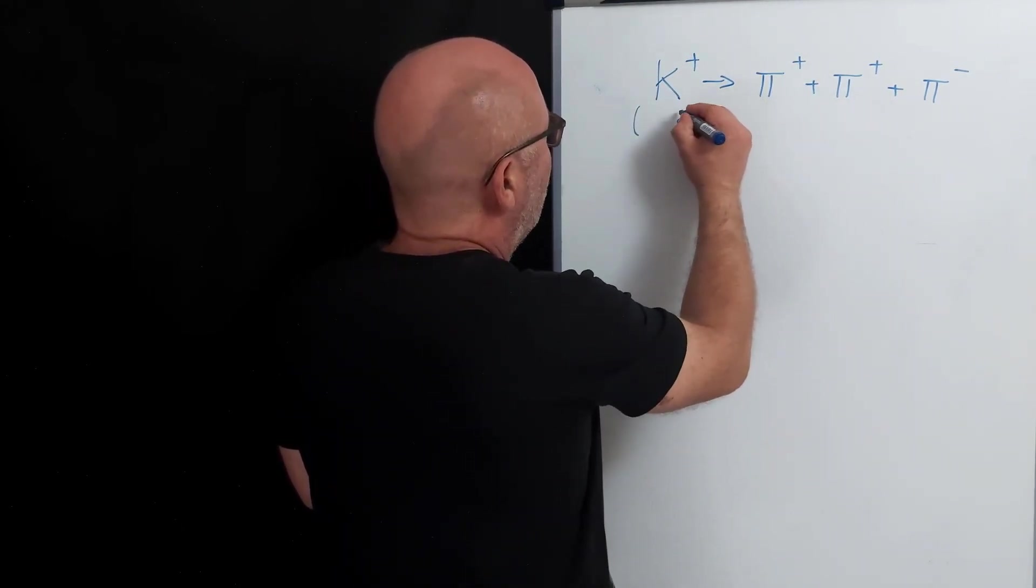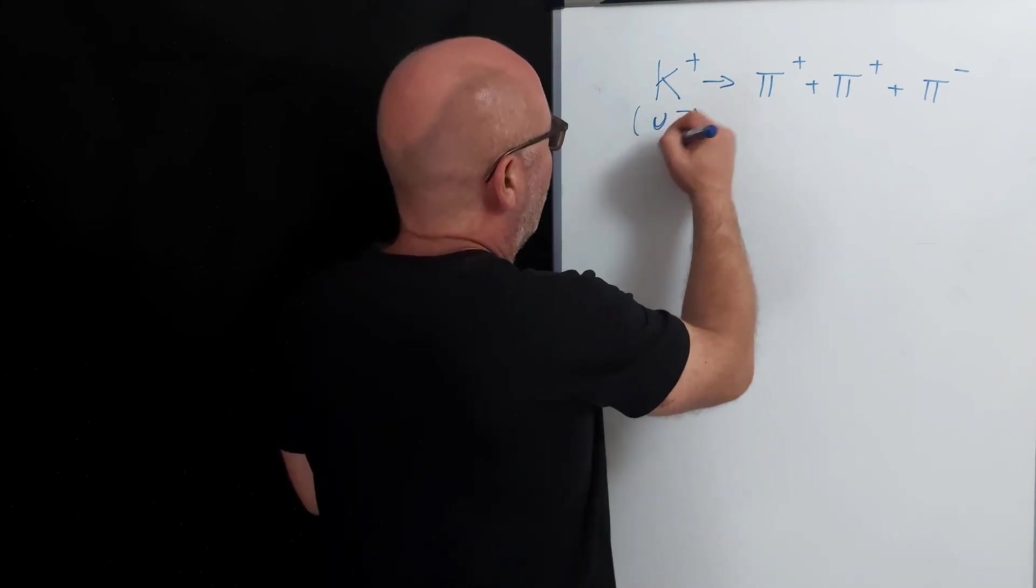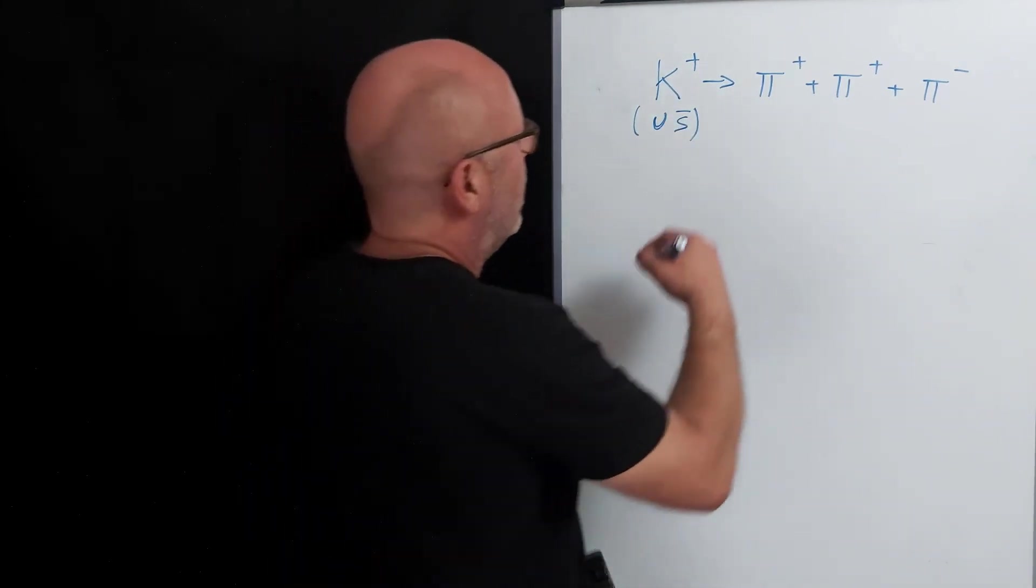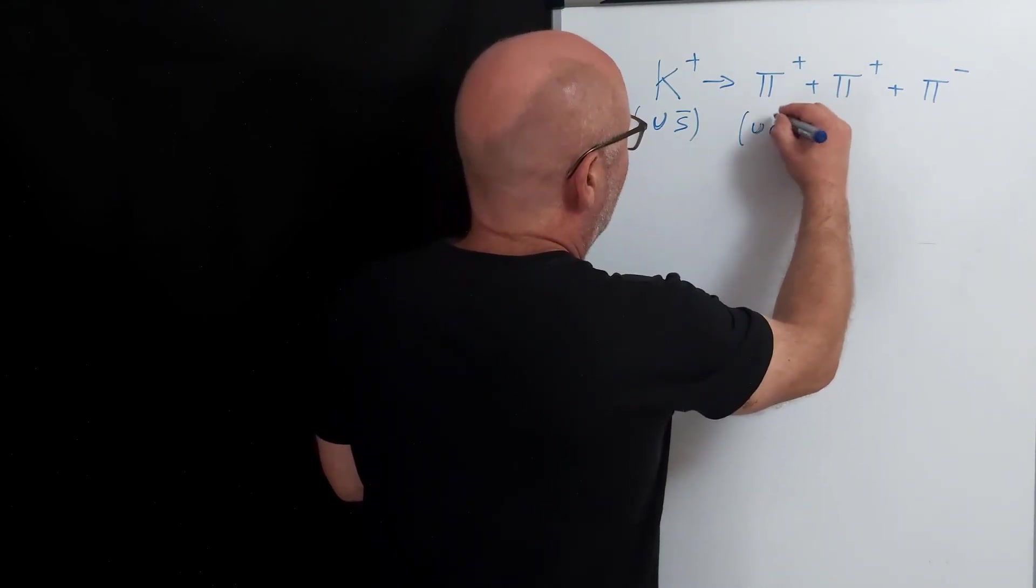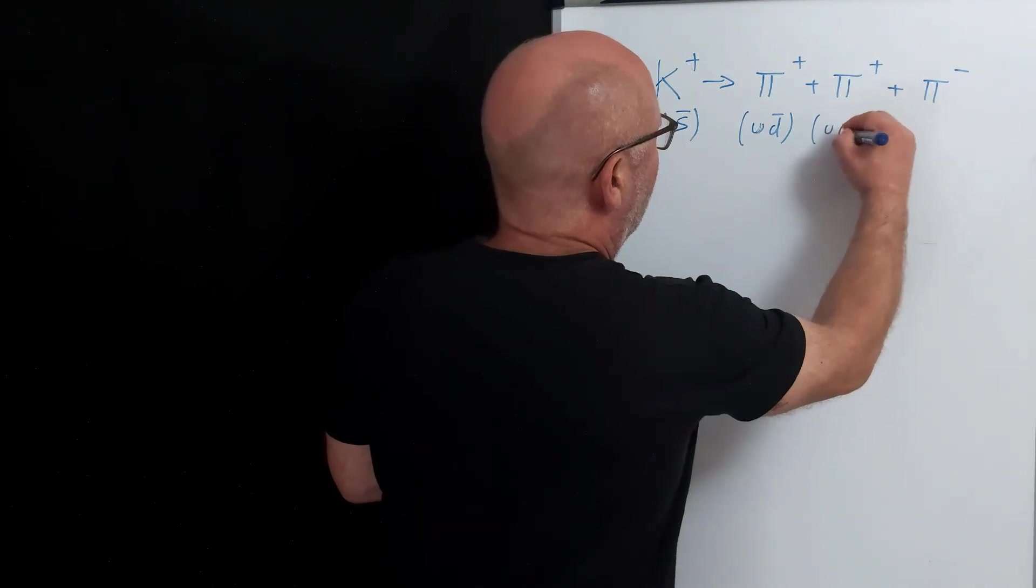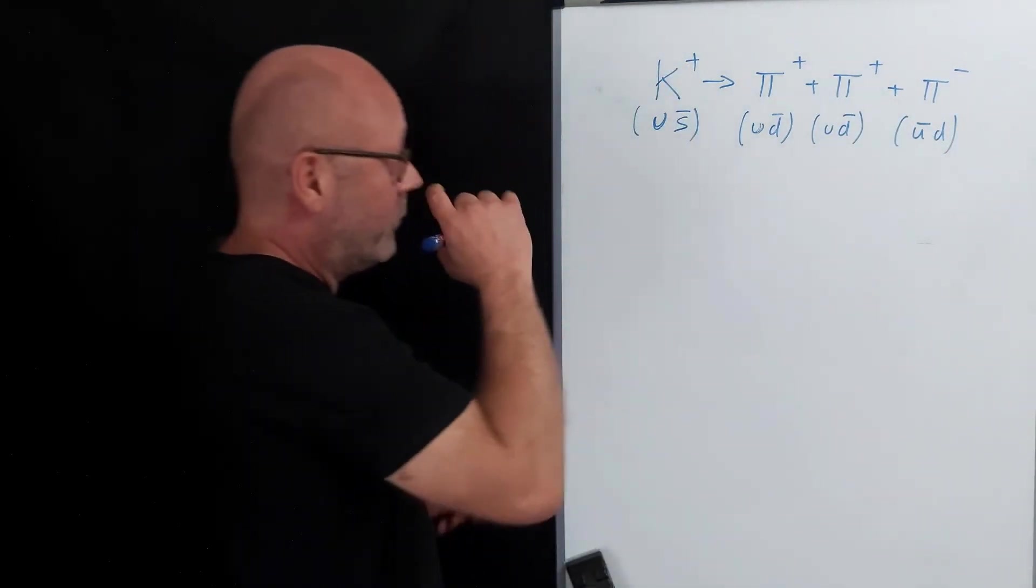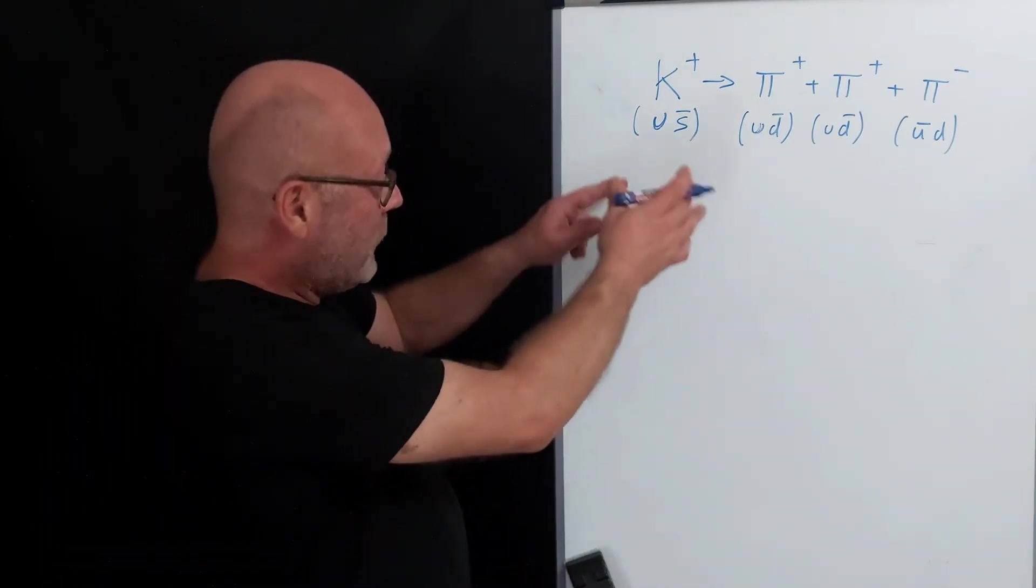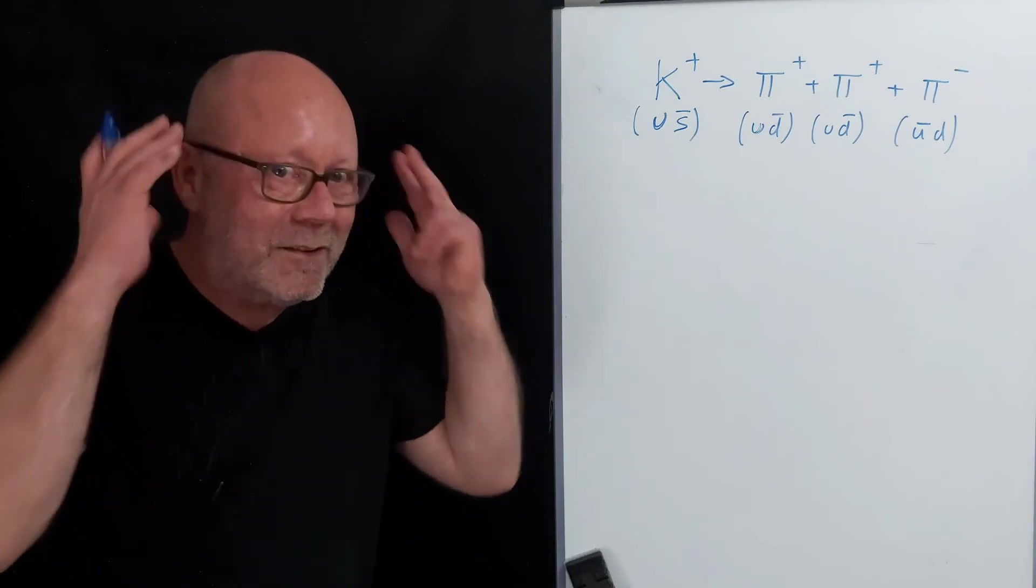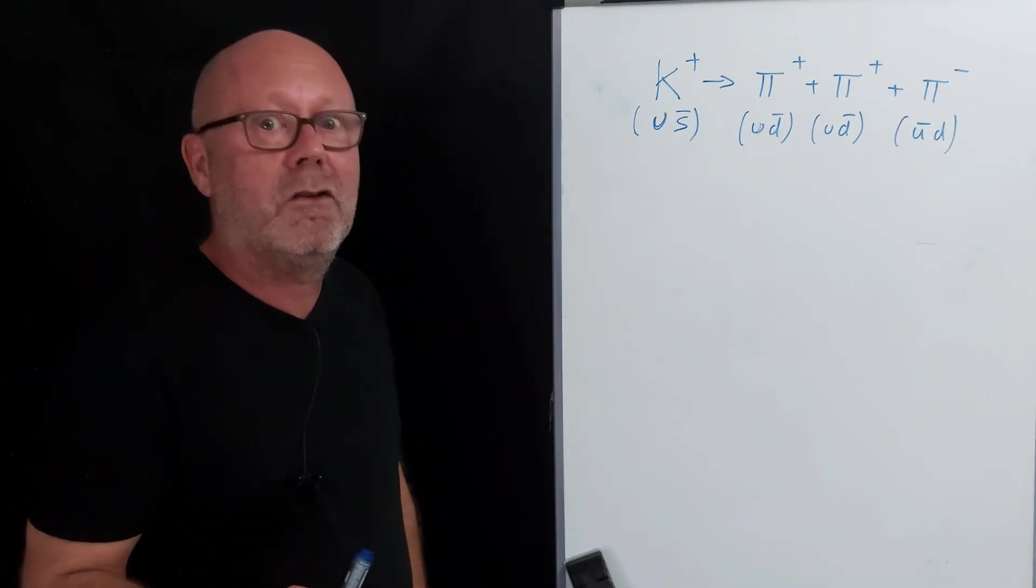Kaon plus, so there has to be a strange and I would see an anti-strange and then up. Yeah, that would work. Up anti-strange and pi plus, so it would be up anti-down, up anti-down, and anti-up down. Okay, let's give it a shot. And afterwards, I'm going to actually try to remember what I saw and then as an exercise you'll verify if I got it right or not.